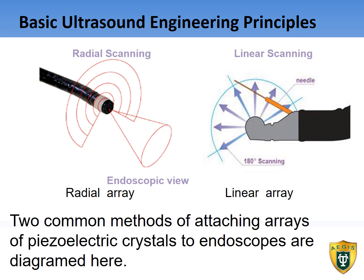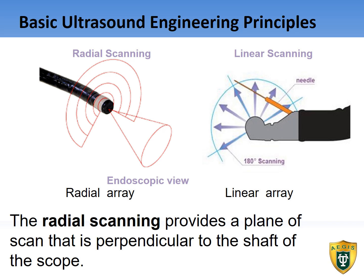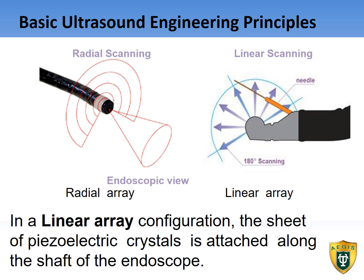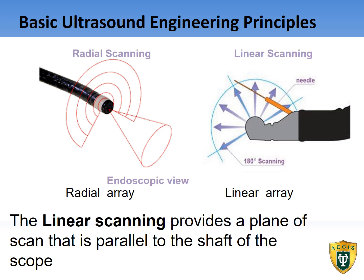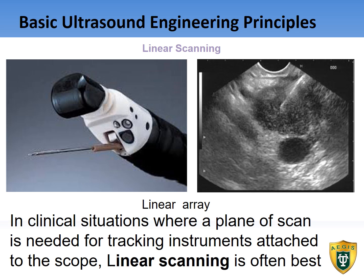Arrays of piezoelectric crystals are attached to endoscopes and probes in various ways to provide unique imaging capabilities. Two common methods are diagrammed here. In a radial array configuration, the sheet of piezoelectric crystals is wrapped around the shaft of the endoscope, providing a plane of scan that is perpendicular to the shaft. In a linear array configuration, the sheet is attached along the shaft, providing a plane of scan parallel to the shaft. Radial scanning is often best when a 360-degree view is required, while linear scanning is often best for tracking instruments attached to the scope.